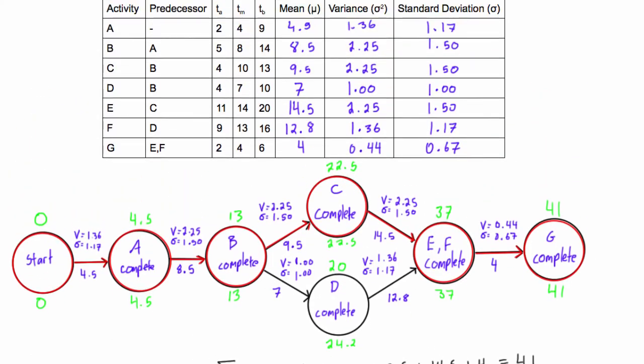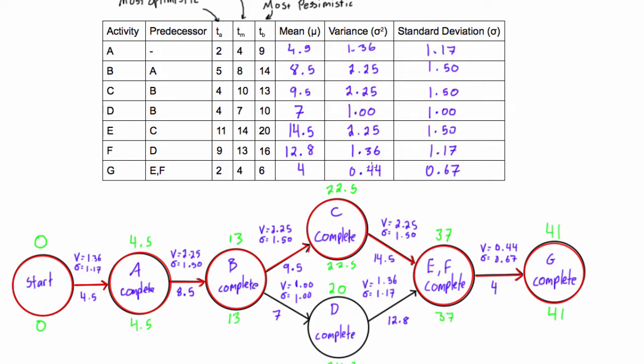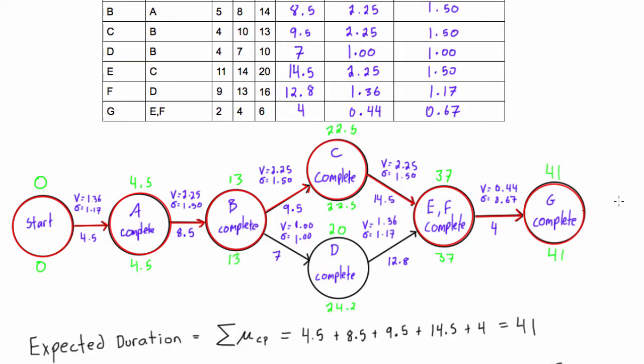So something to notice is don't just go and add up all of the variances for every activity in the project. It's every activity along the critical path. Same with the duration, and you know that from doing network diagrams up until this point.